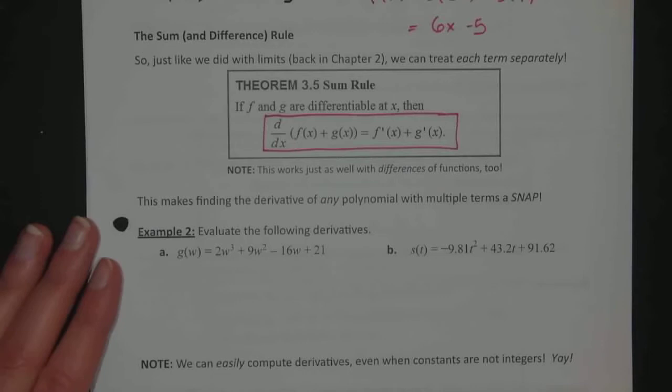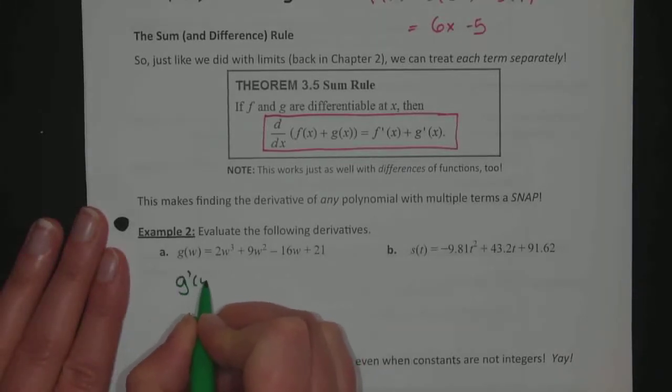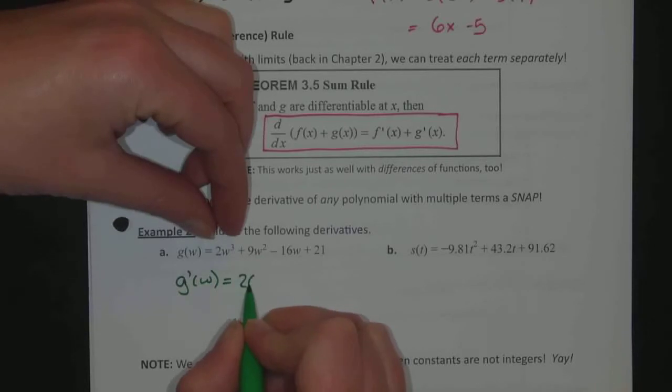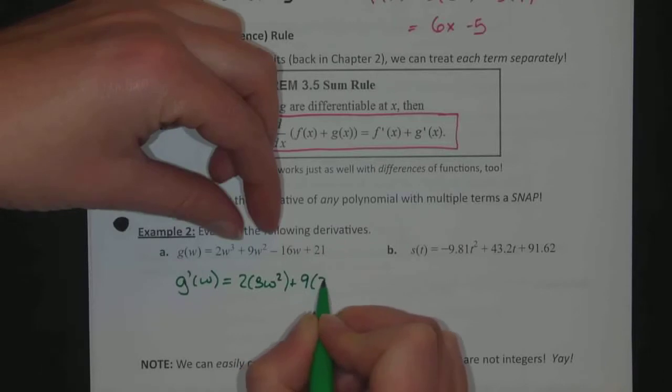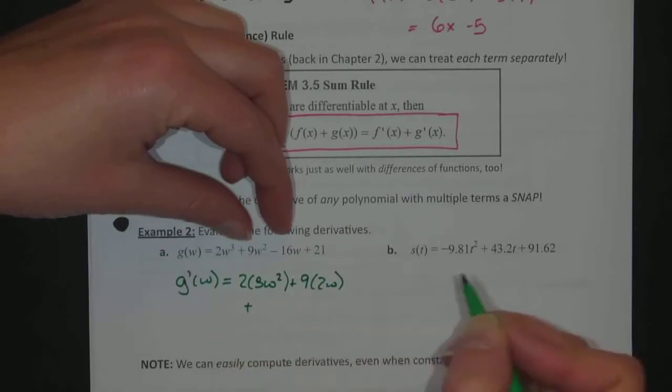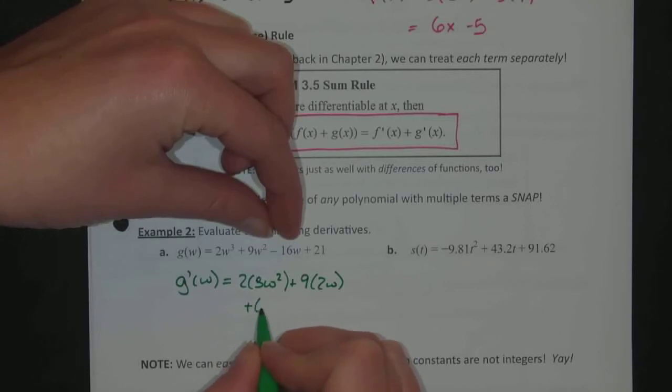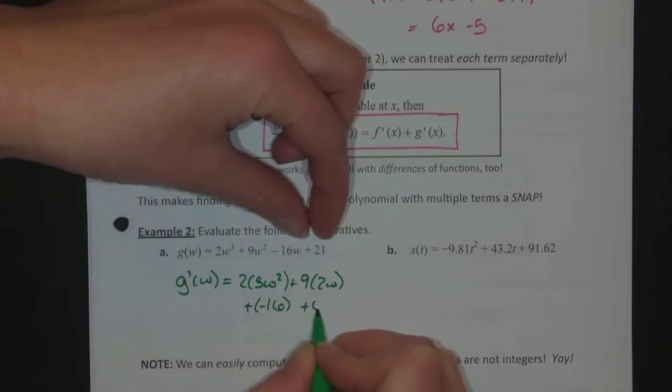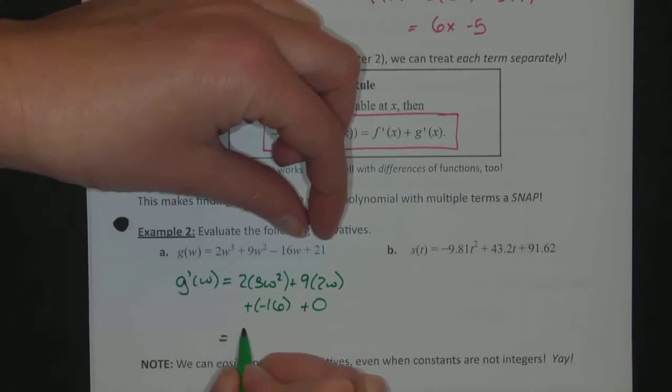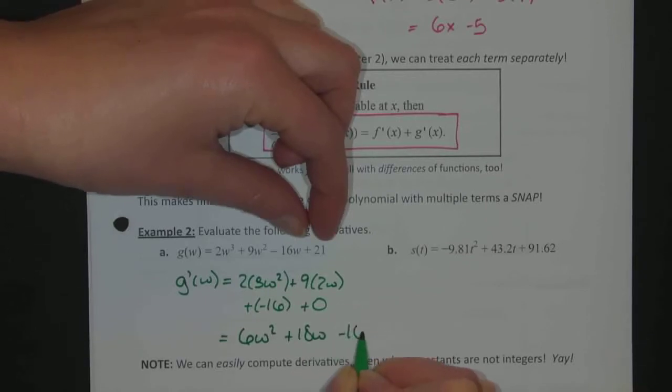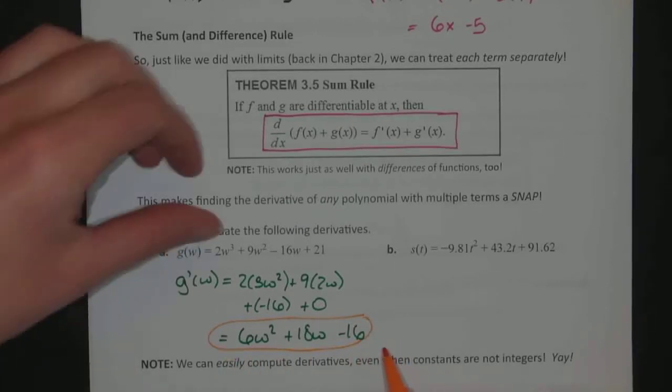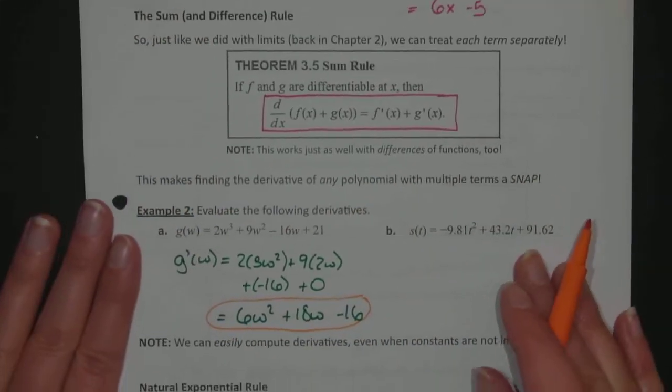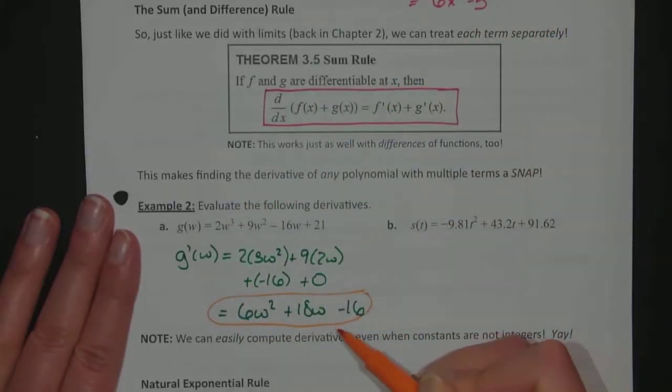In the next case, I'm looking at the derivative of g(w). It's going to use the power rule, so it's going to be 2 times 3w squared plus 9 times 2w plus negative 16, and then the derivative of a constant is 0. For our conclusion, we'll have 6w squared plus 18w minus 16 for the derivative of this function. The more comfortable we get with derivatives, we're actually going to go right to that line, but I'm trying to write out my steps to make sure that we are understanding where each of those values comes from.